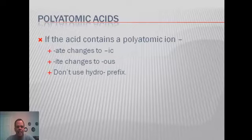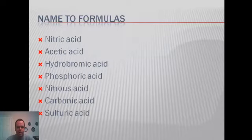If the polyatomic ends in -ite, we'll change it to -ous. We'll still use the word acid as the second word, but we will not use the hydro prefix. So let's look at some examples of these.